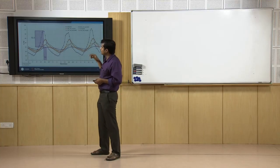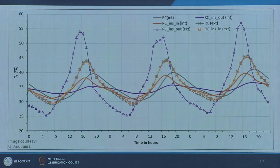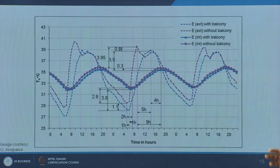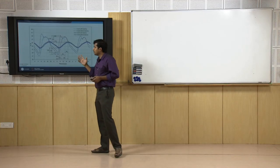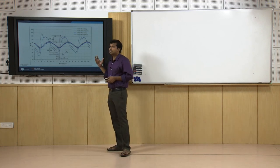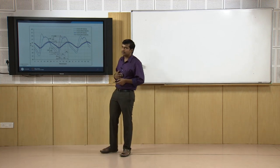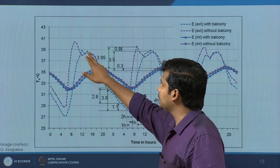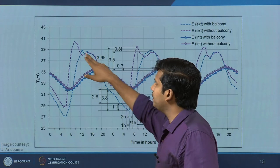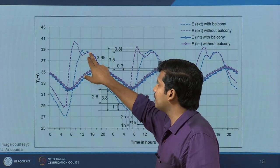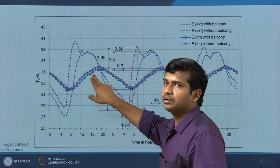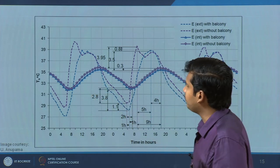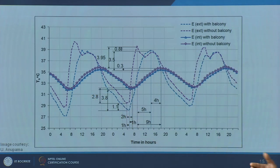Apart from insulation, another important factor affecting time lag and decrement factor is shading — especially the presence or absence of balconies. Balconies not only reduce the magnitude of peak solar temperature, affecting indoor surface temperatures, but also impact ventilation efficiency. The amplitude reduction is considerable with proper shading.